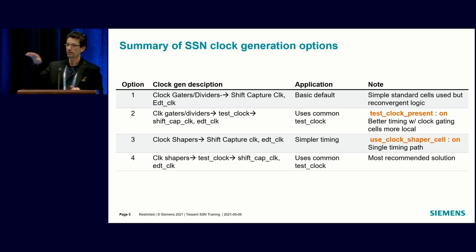I'll show each of these in more of a schematic view. If you don't do anything, the basic default is we have some simple clock gators and dividers that generate the internal clocking in the SSH, which is the shift capture clock and EDT clock. You can use simple standard cells. There is some reconvergent logic, so the timing closure is a little bit harder. This works, but the next option we have is to generate a test clock signal. This is that same signal I mentioned for SSH bypass. There's a timing advantage with using the signal.